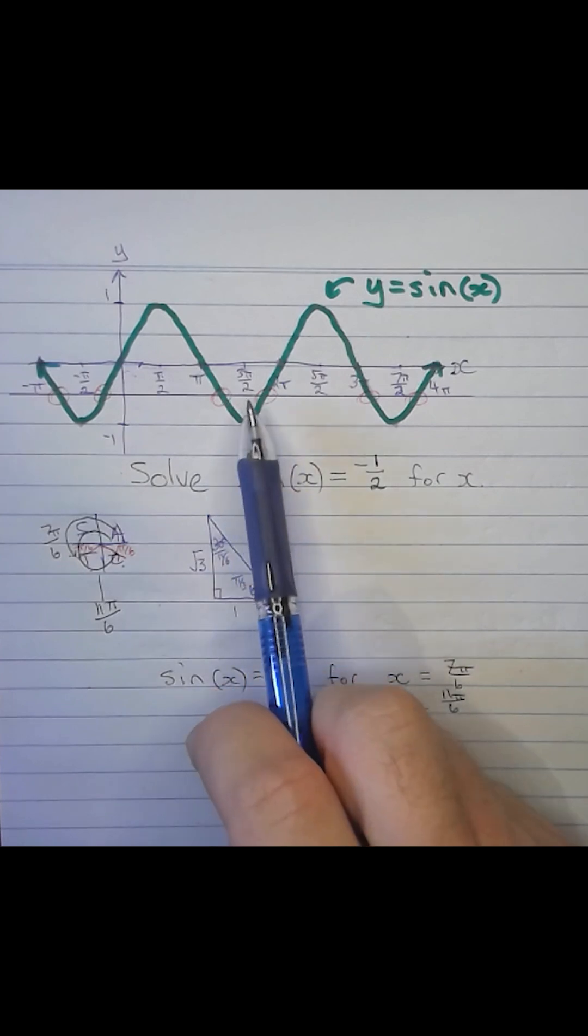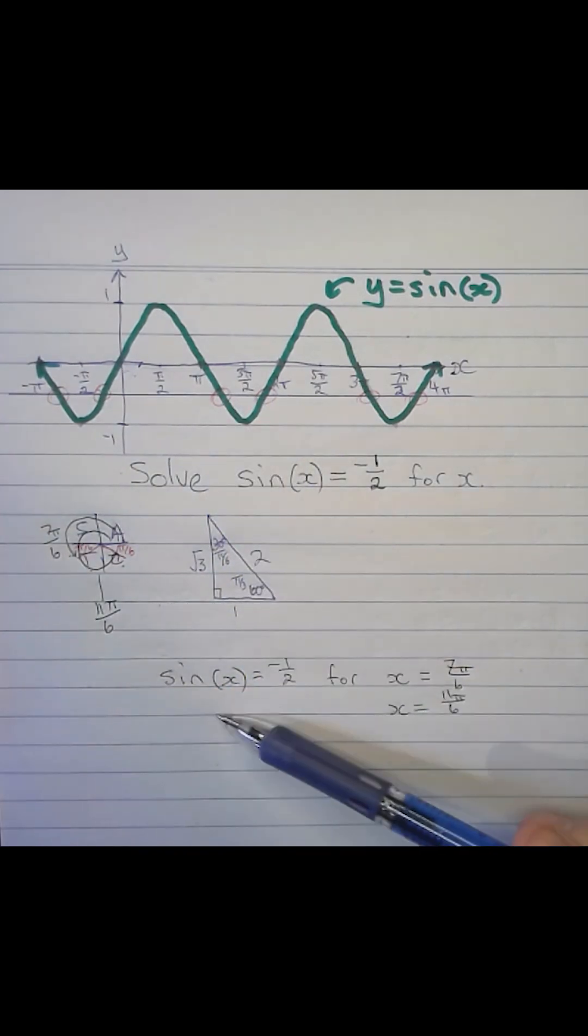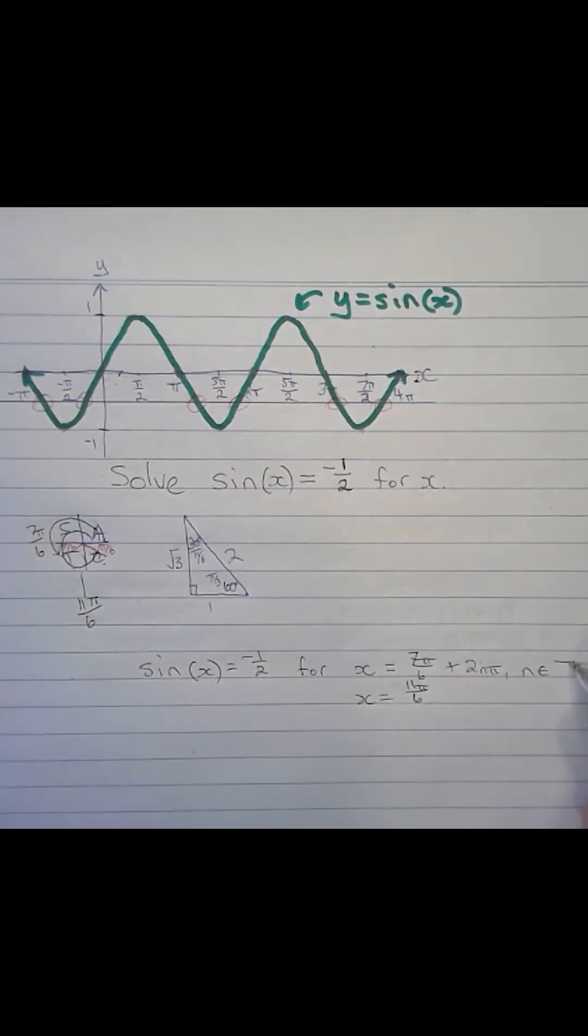But remember, that's just two of the solutions. So what's going to happen is the value of sin(x) is going to repeat itself every 2π along the x-axis. So there we have our solutions for the equation sin(x) = -1/2.